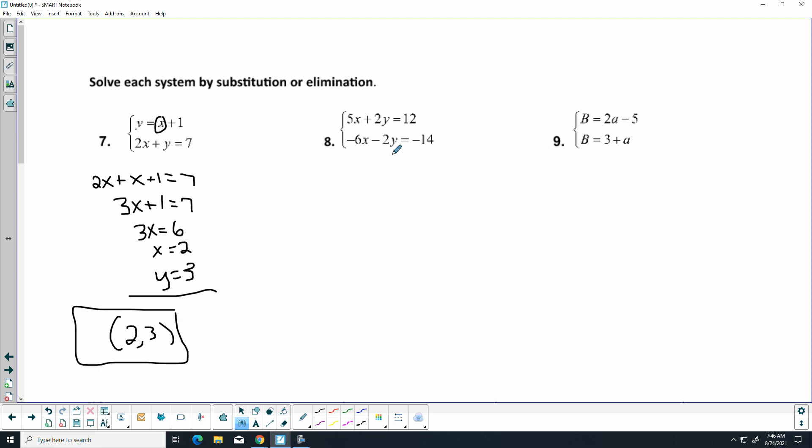I already have opposite coefficients, so I'm just going to add those together. And, that's going to give me negative 2. x is 2. I'm going to plug that into the top equation. 10 plus 2y equals 12. Subtract 10. Y is 1. So, 2, 1.